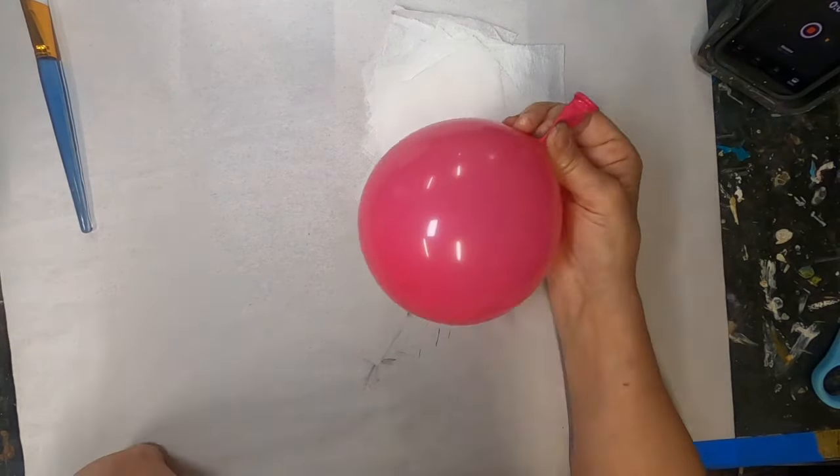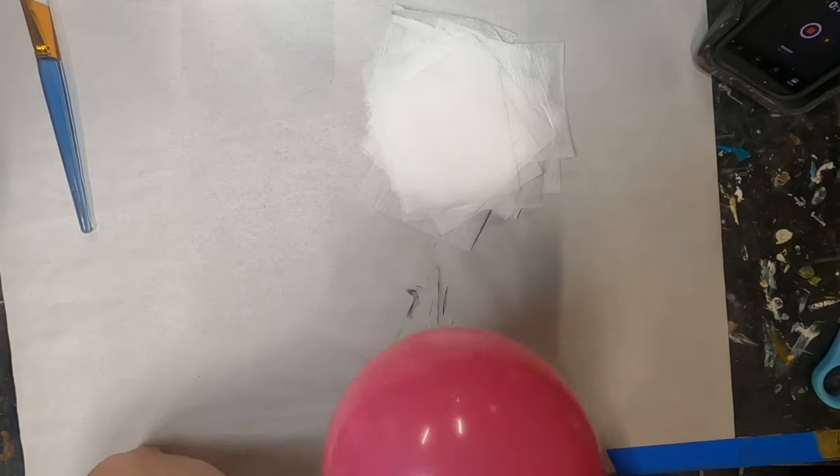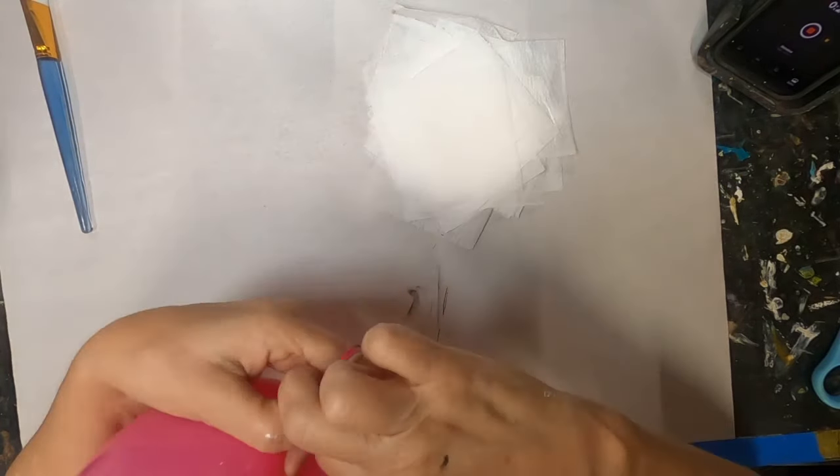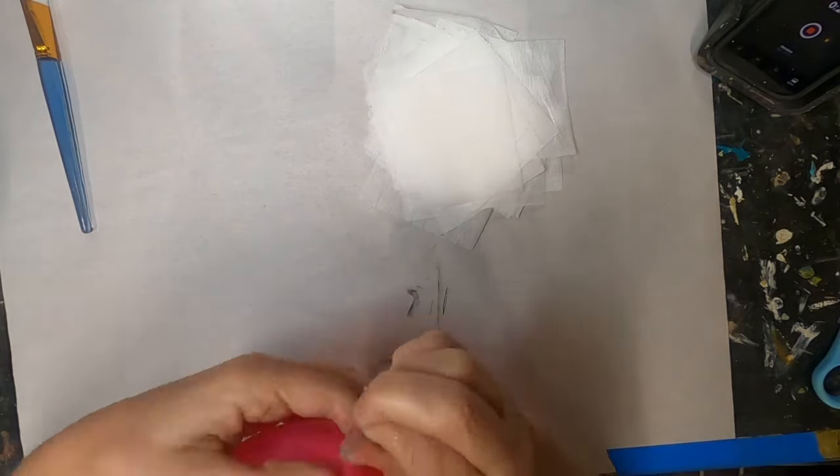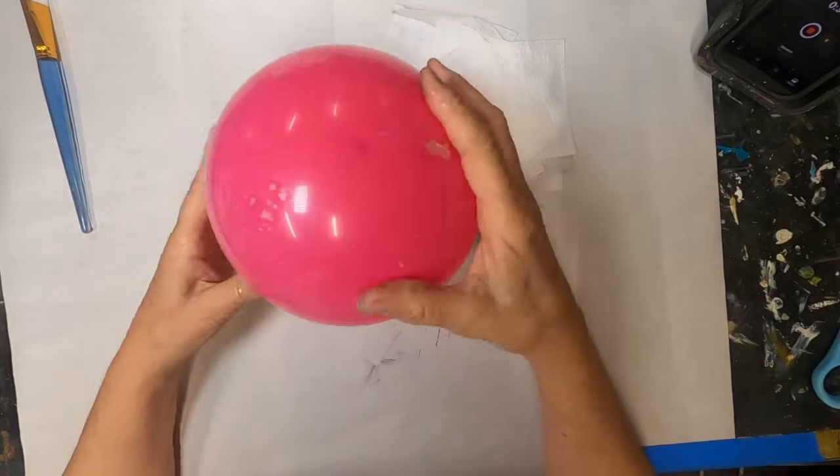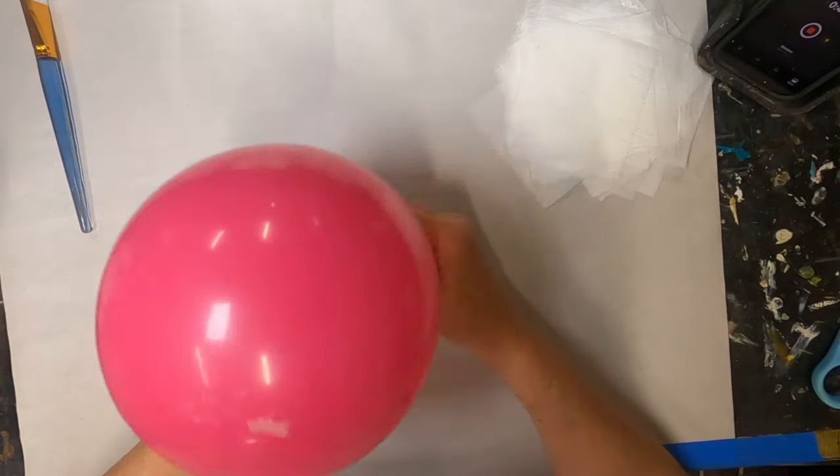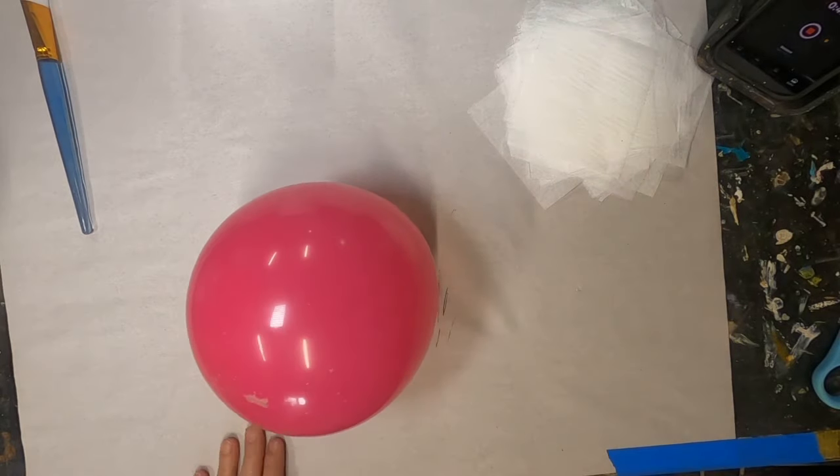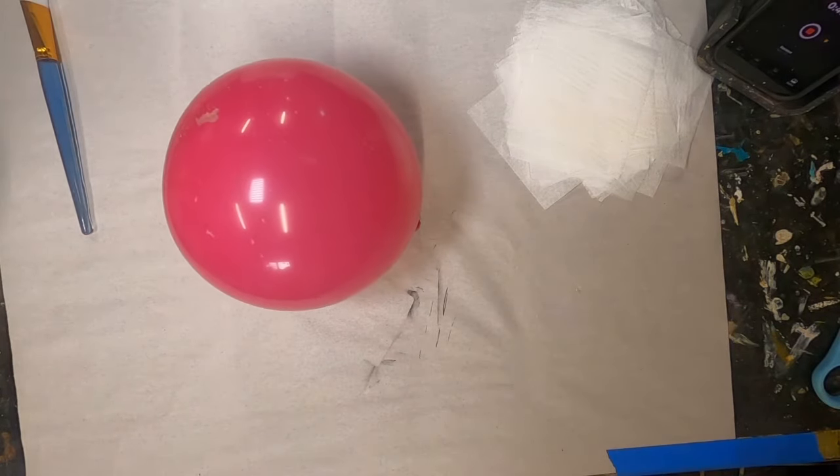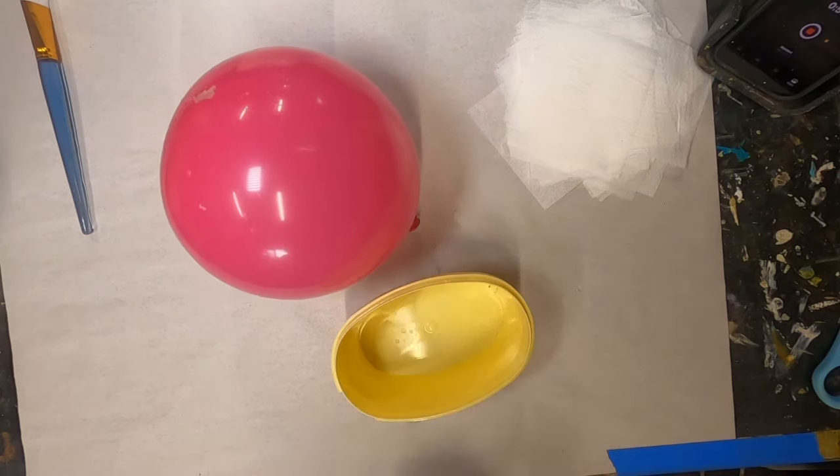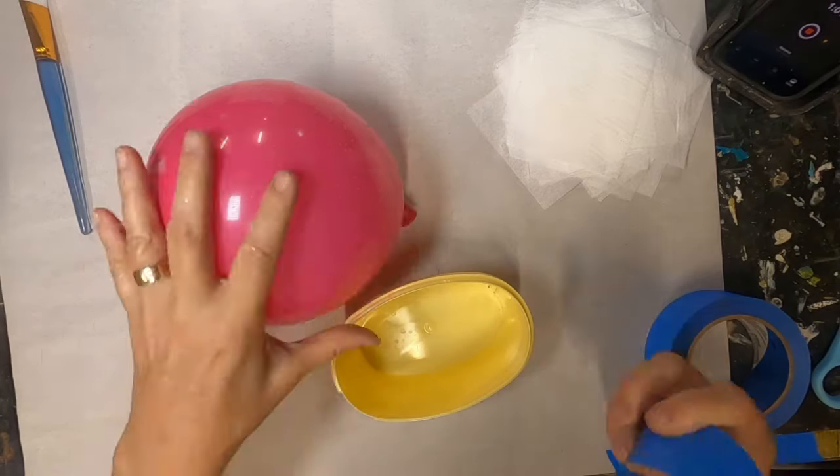I have a balloon. I'm going to blow the balloon up and try to get it as round as I possibly can. I think that's probably good right there. I'll tie that off. I want to be able to hold on to that, so I'll put some tape at the bottom where that balloon is tied.